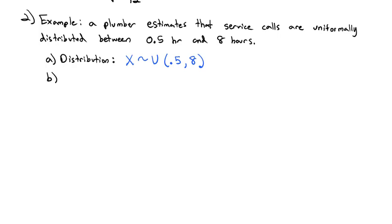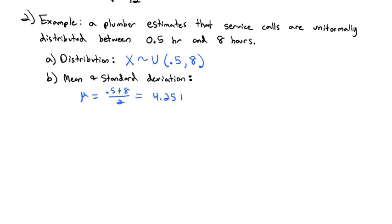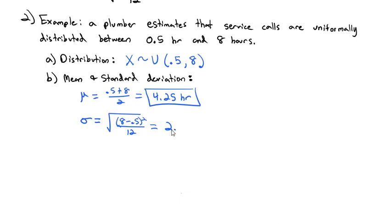We can easily calculate the mean and standard deviation using the formulas for the uniform distribution. The mean is the average: (0.5 plus 8) divided by 2, which is 4.25 hours. So this plumber's average service call is about 4 and one quarter hours, or 4 hours 15 minutes. The standard deviation is the square root of (8 minus 0.5) squared divided by 12. Putting that into our calculator, we get a standard deviation of 2.165 hours.